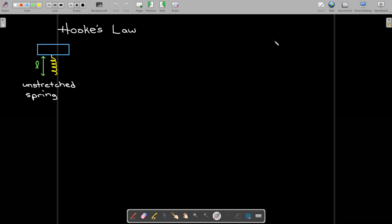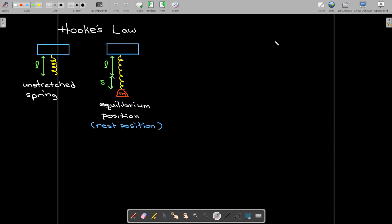So let's do a review of Hooke's Law. Initially, you have a spring which is not stretched. It has length l. And then you attach an object to it, some mass, and it stretches an additional s units. That's what we call the equilibrium position.